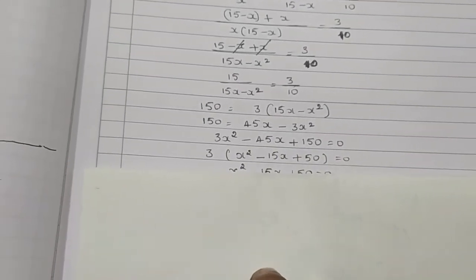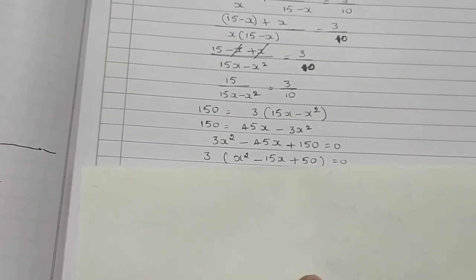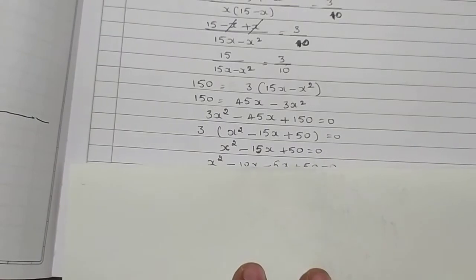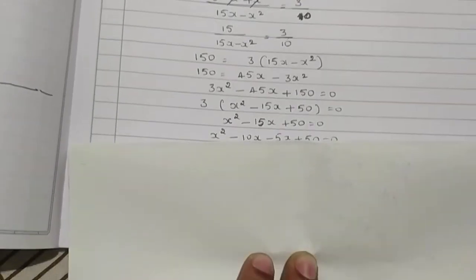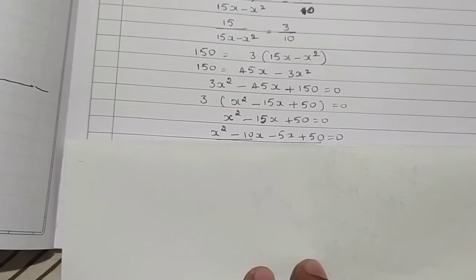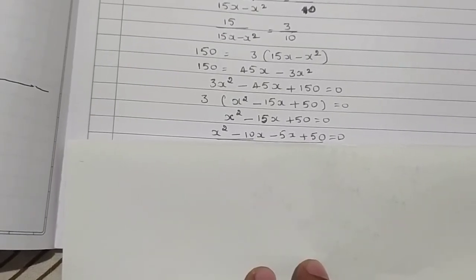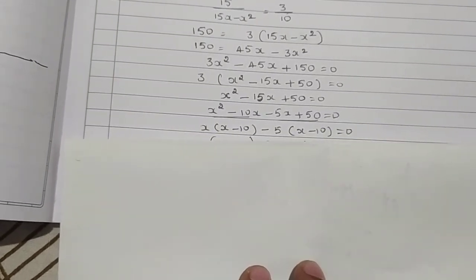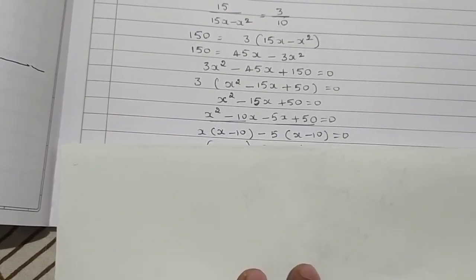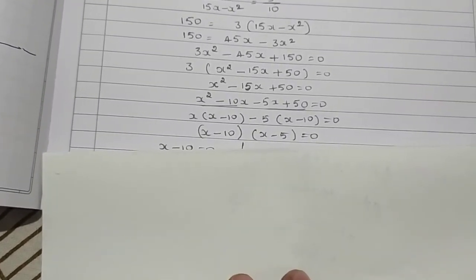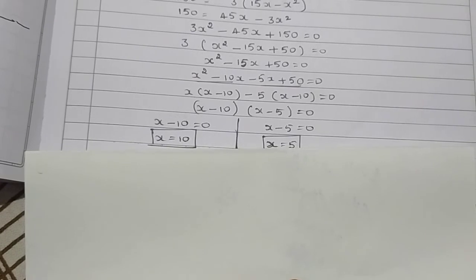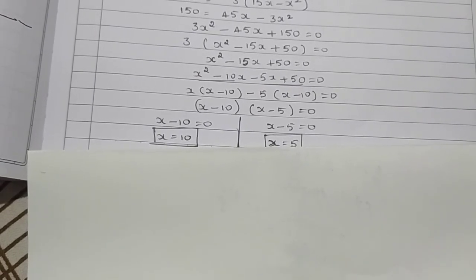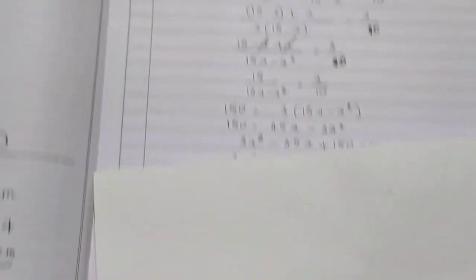Since 3, 45, and 150 are multiples of 3, we take 3 as common: x square minus 15x plus 50 equals 0. Splitting the middle term as minus 10x minus 5x: x square minus 10x minus 5x plus 50 equals 0. Factoring: x(x minus 10) minus 5(x minus 10) equals 0, giving (x minus 5)(x minus 10) equals 0. Therefore x equals 10 or x equals 5. So the two numbers are 10 and 5.